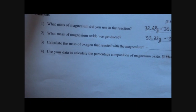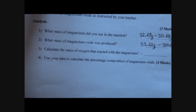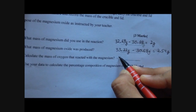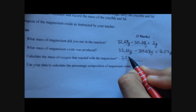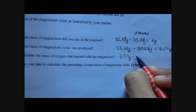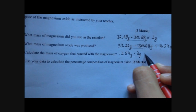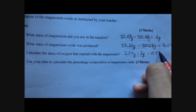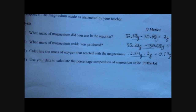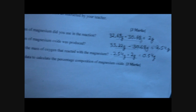Question 3: Calculate the mass of oxygen that reacted with magnesium. To do that, take the mass of magnesium oxide and subtract the mass of magnesium used. This gives you 0.54 grams — so the oxygen used was 0.54 grams.